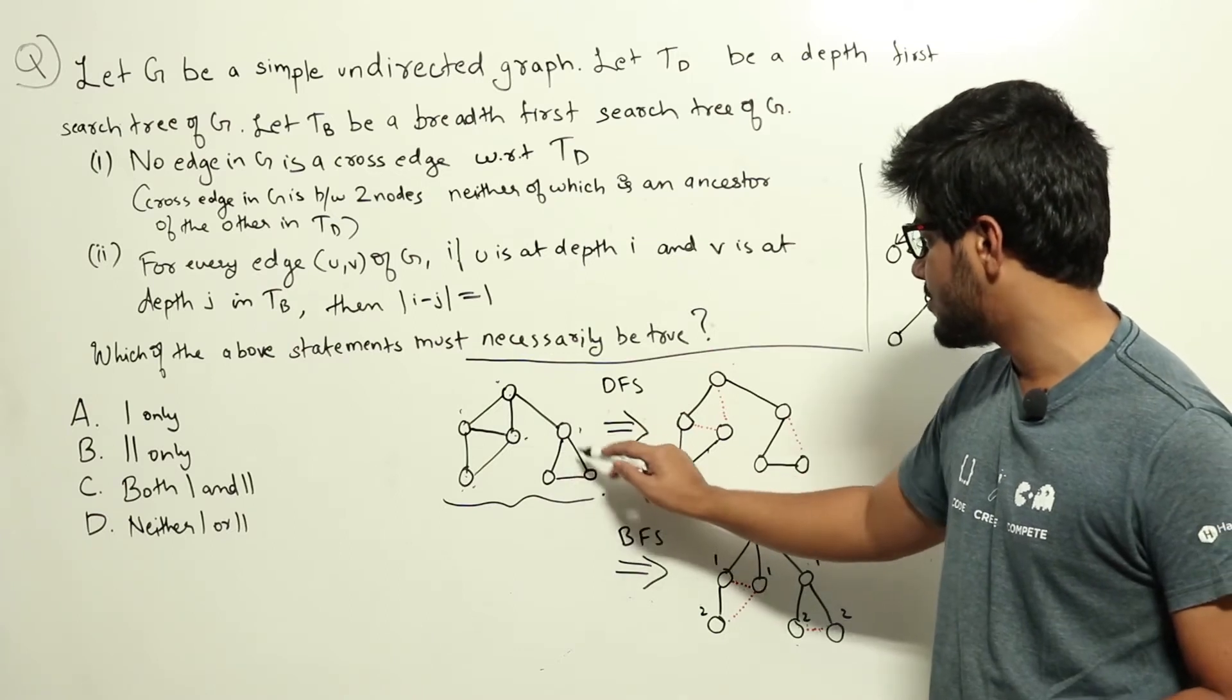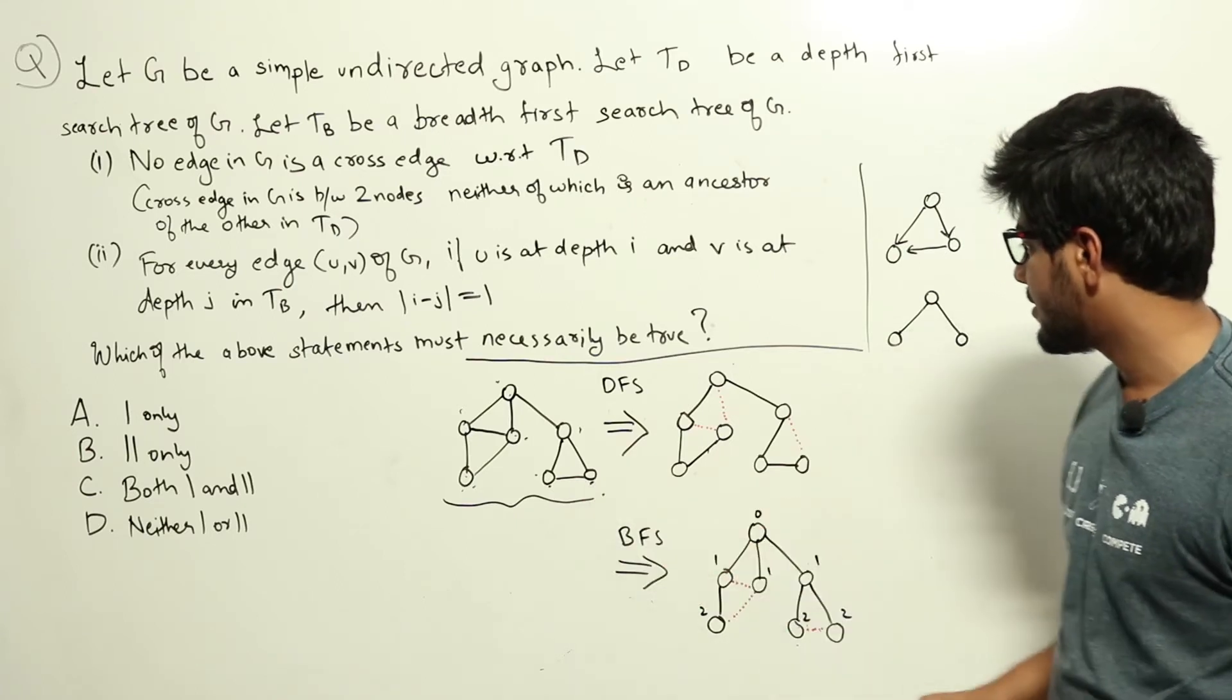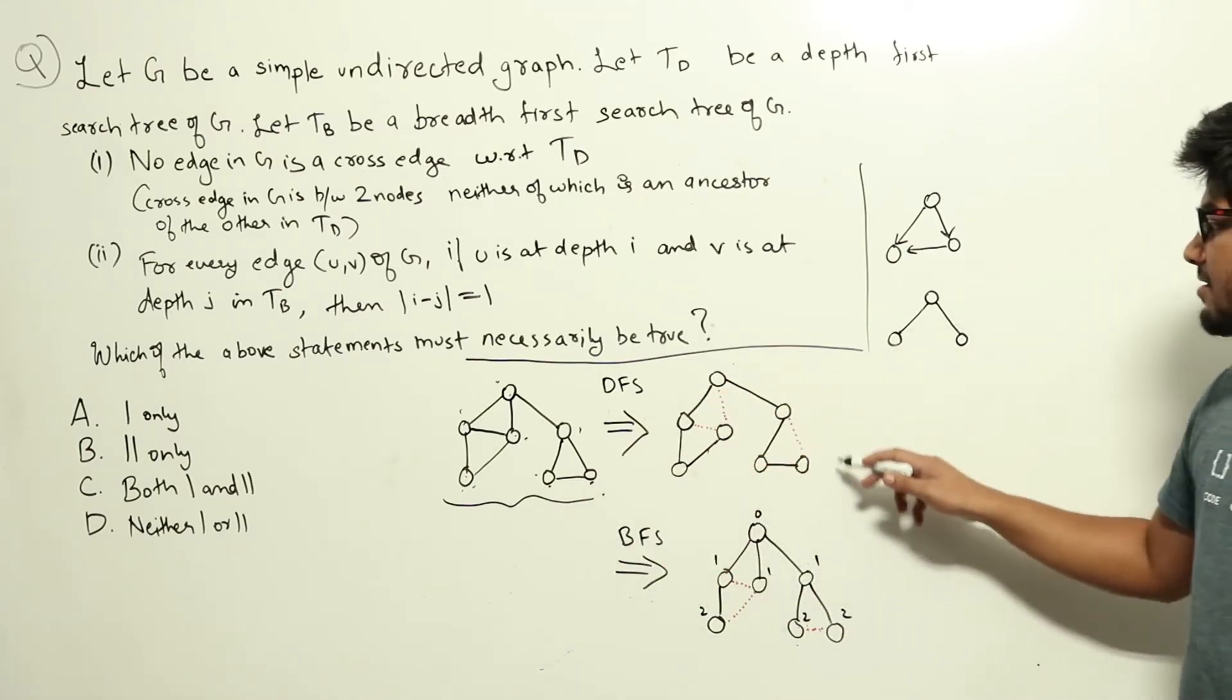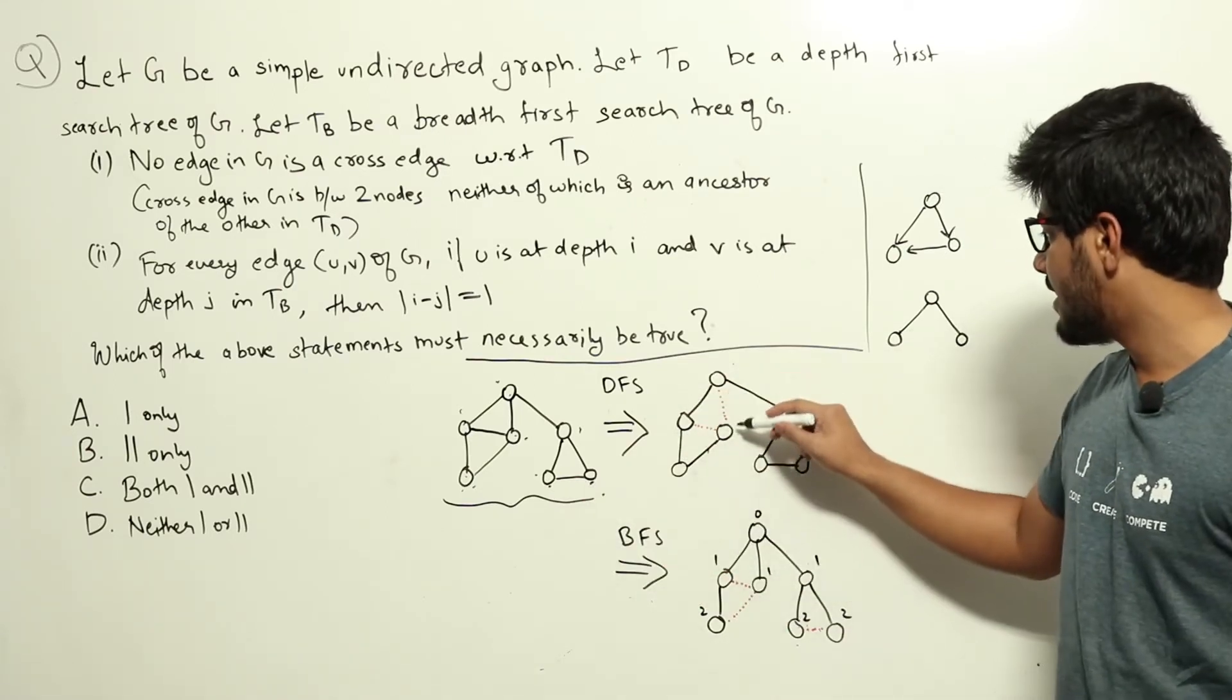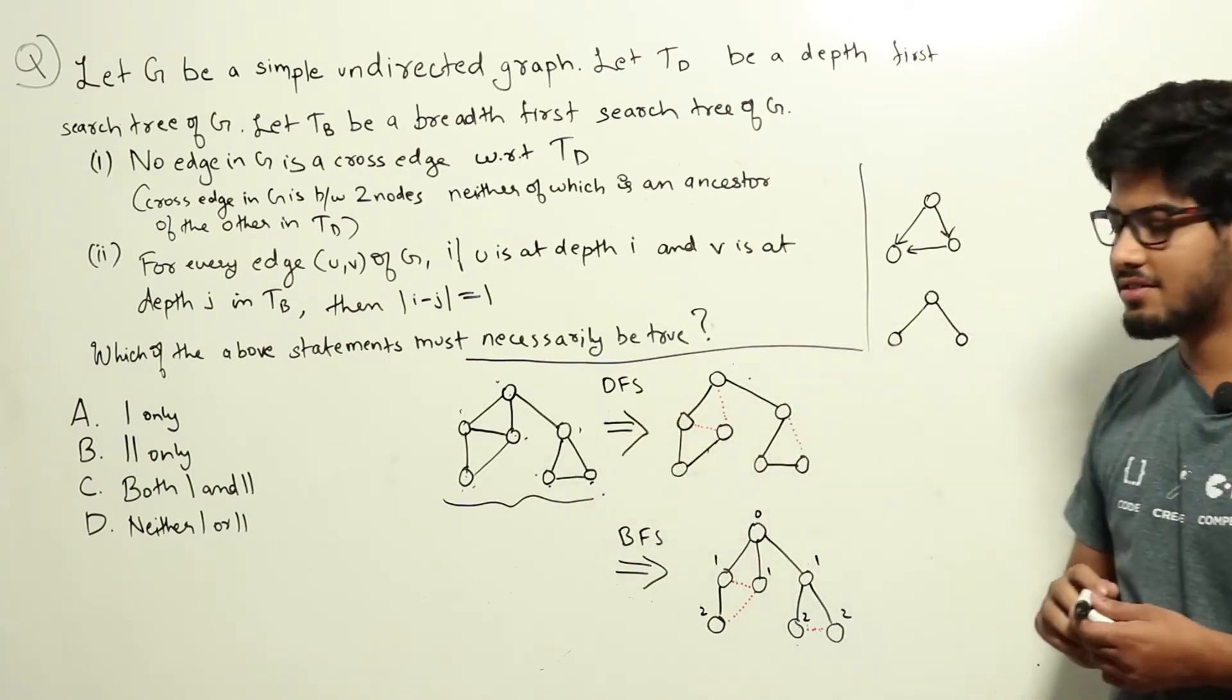This has two children, these two. We can go to one of these, say this, and let us say we can go here. So, this is the DFS tree here. In red dotted lines, I have marked the edges in G, which are not there in this DFS tree.